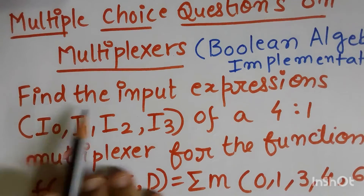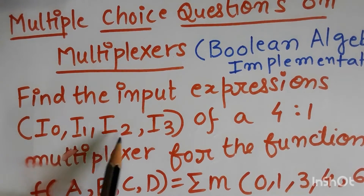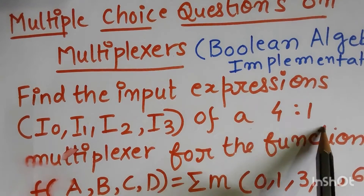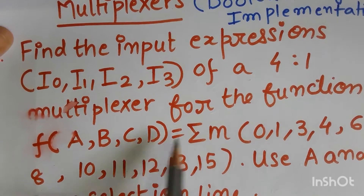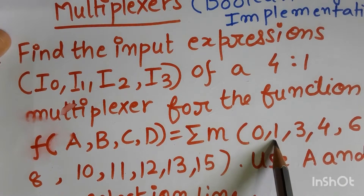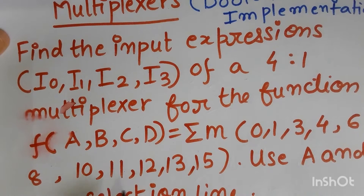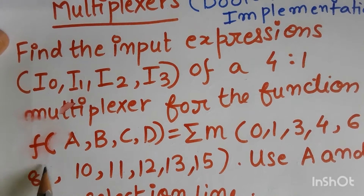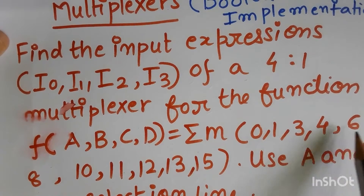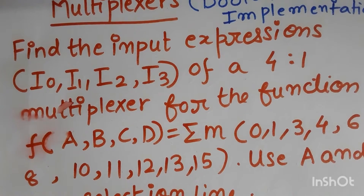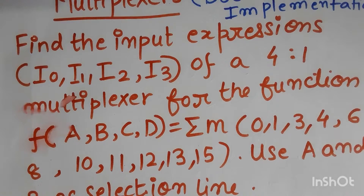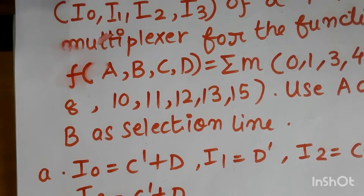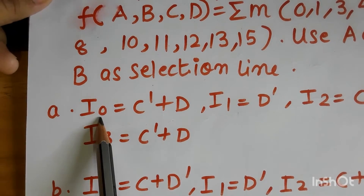The question is: find the input expressions I0, I1, I2, I3 of a 4-to-1 multiplexer for the function f(a,b,c,d) = Σm(0,1,3,4,6,8,10,11,12,13,15). Use a and b as selection lines. Four answer options have been given.